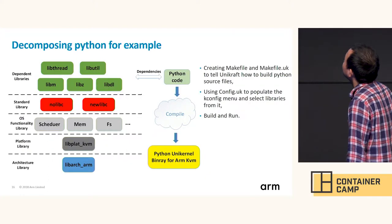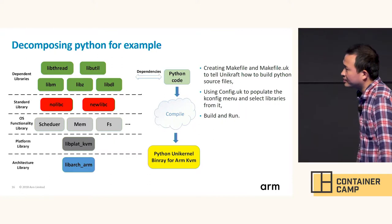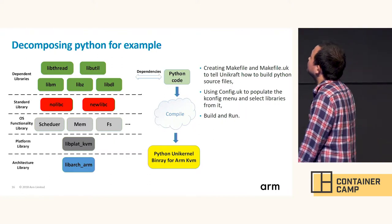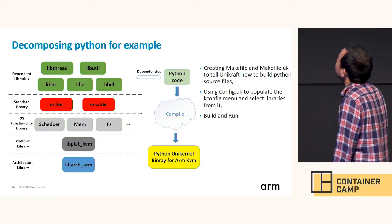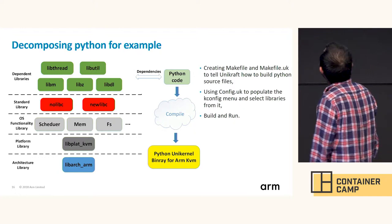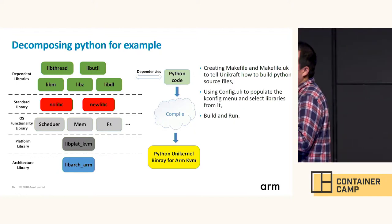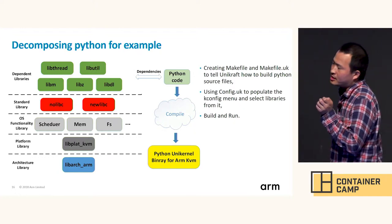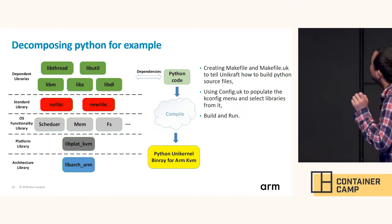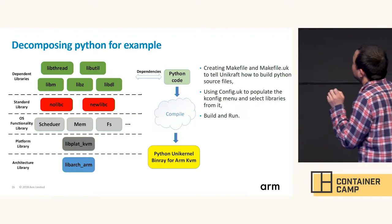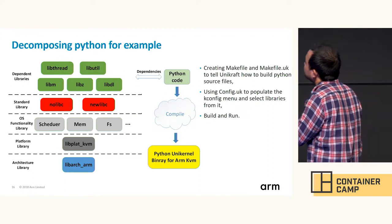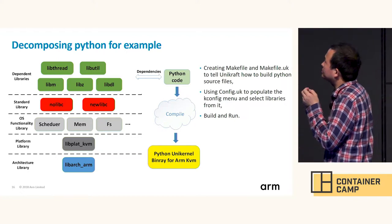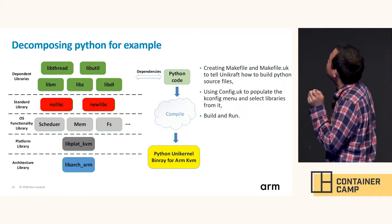Let's use Python as an example. After analyzing Python's dependencies, we know that when building Python in Linux, we link to lib-thread, lib-utils, lib-m, lib-z, lib-dl, and libc.